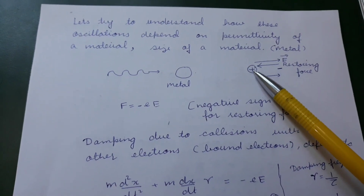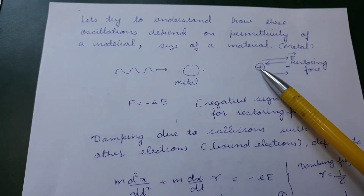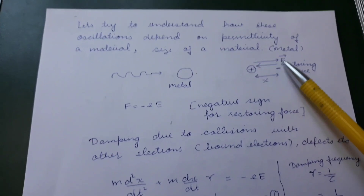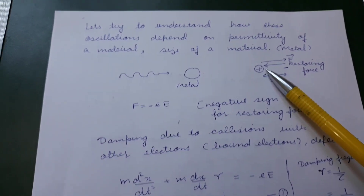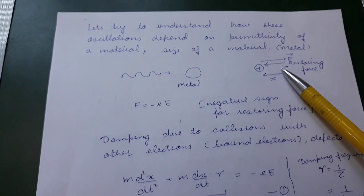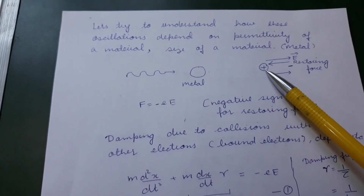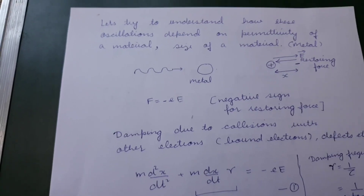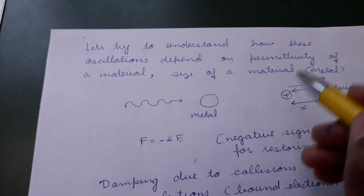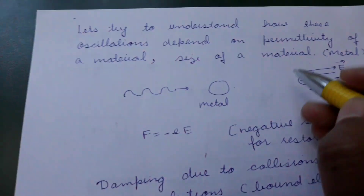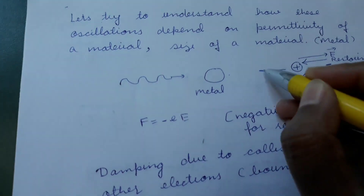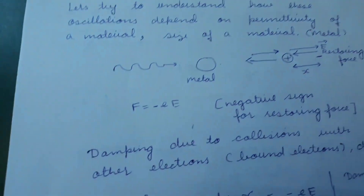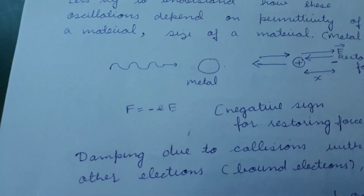the electron cloud and the positive charge will be at some distance from each other, and an equal amount of restoring force will be applied by the positive ion so that the electron can be restored to its original position. On the way it will gain kinetic energy and shift to the other side, and therefore these oscillations will continue in the presence of an oscillating electric field.